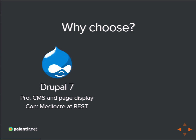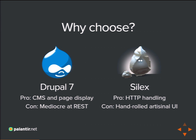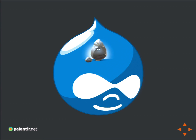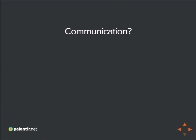None of these alone looked like the right platform, so the answer was: combine them. Drupal 7's strong advantages are as a content management system — displaying pages and administrative screens. But Drupal 7 is kind of lame for REST services. Silex, on the other hand, is really good at HTTP handling with Symfony's strong API for web services. The downside of Silex is any UI you want is hand-rolled from scratch. So let's leverage the right tool for each job and use multiple tools. How do we get them talking to each other? We needed a way to pass data from Drupal to something that could serve the API.